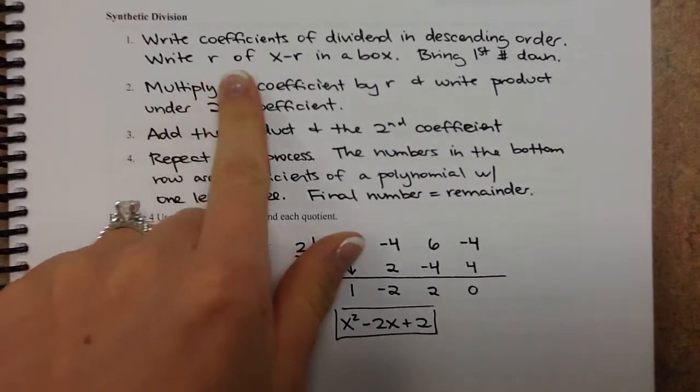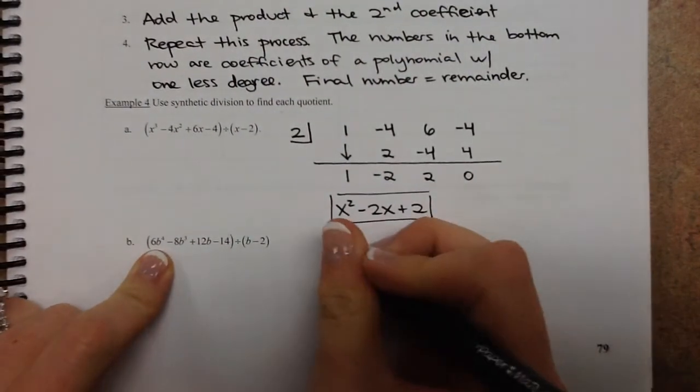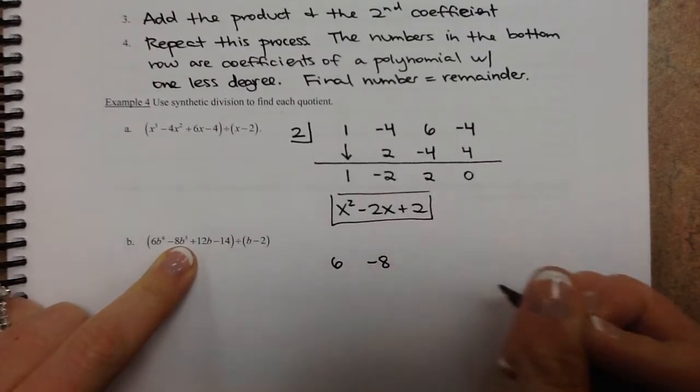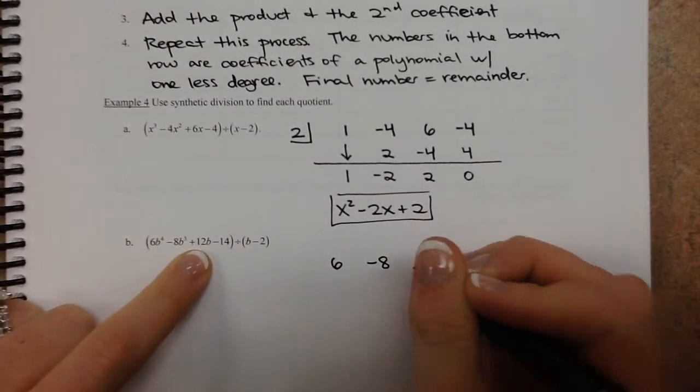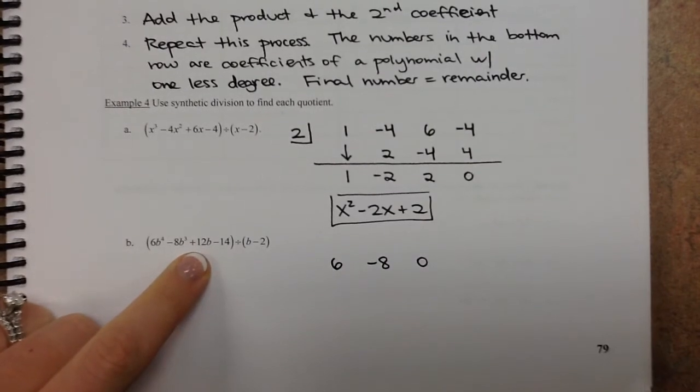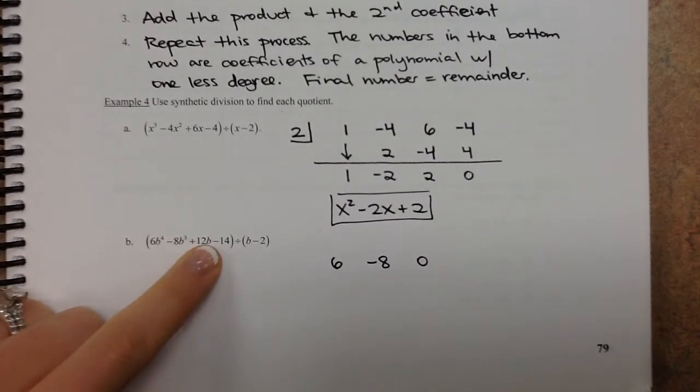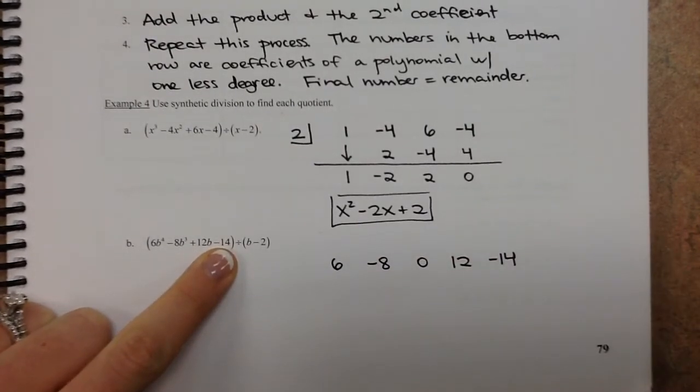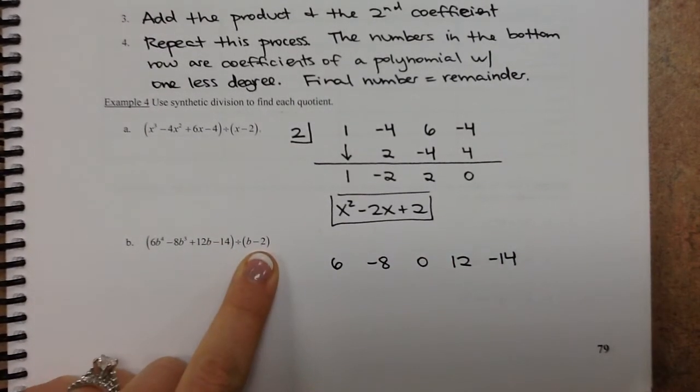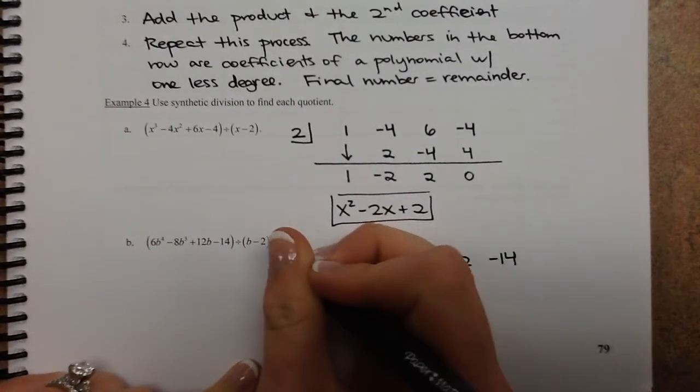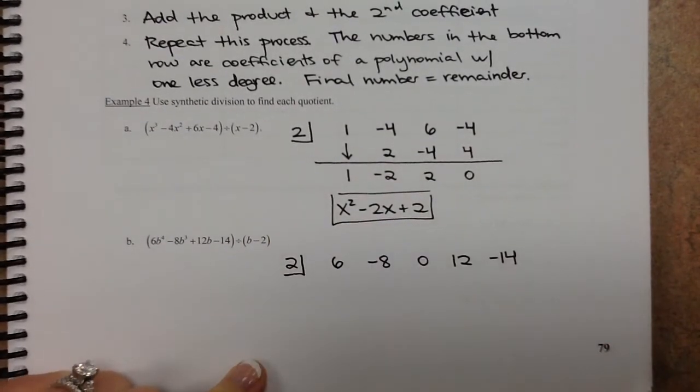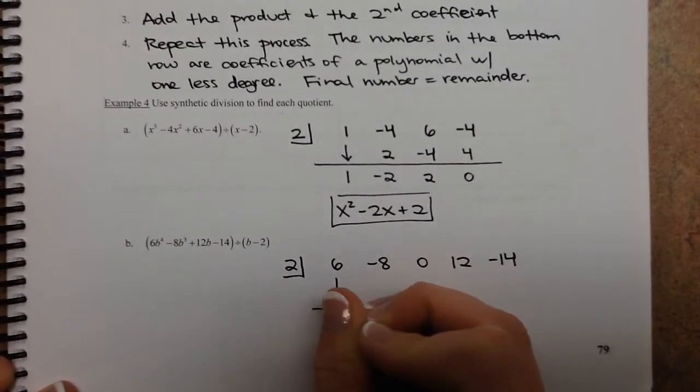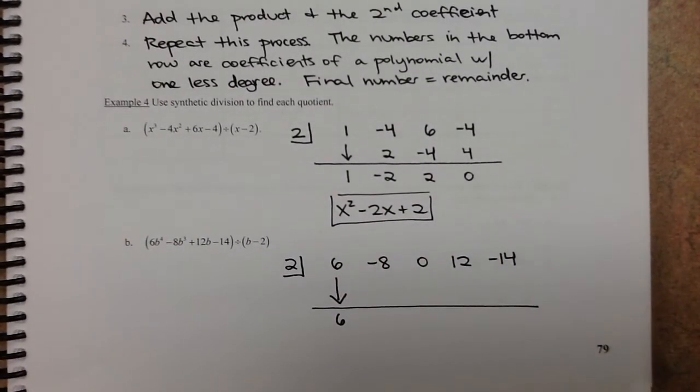So step 1, write the coefficients in descending order. So this one: 6b to the 4th, negative 8b to the 3rd. There is no b squared, write a 0. That part is super, super important. If you forget to do that, you're going to mess the whole thing up. And then 12b, and the constant is negative 14. Put the opposite of this number in a box, so b minus 2 means you put positive 2 in a box. And then we just bring this first number down. And then we start our algorithm.